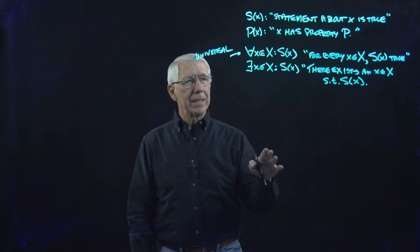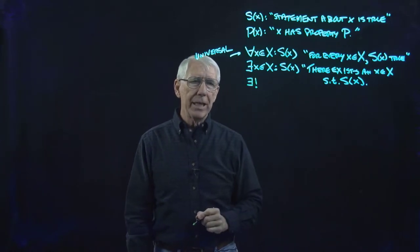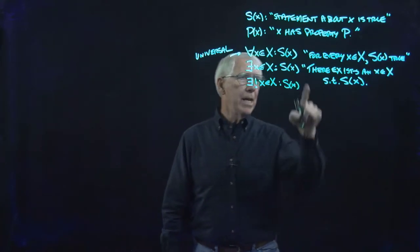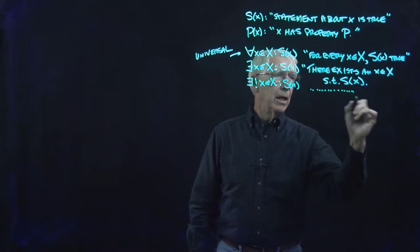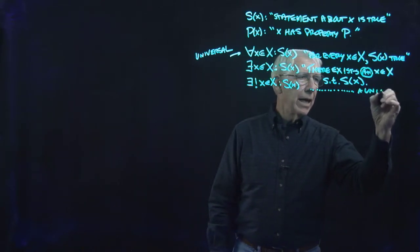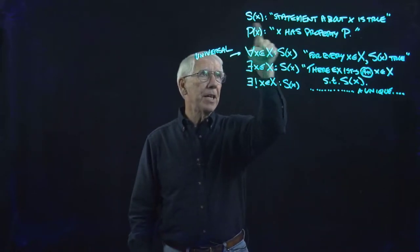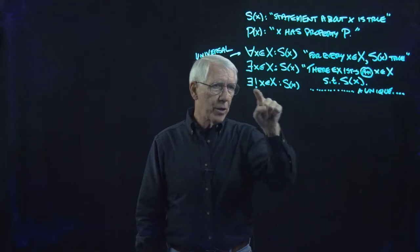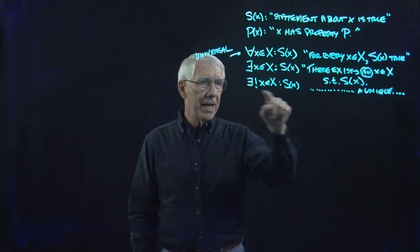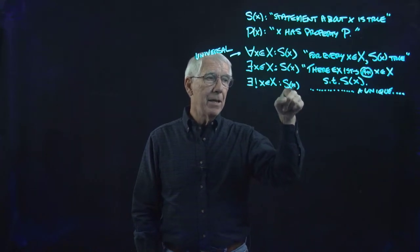There is a third — not really a new different quantifier, but slightly different. We write the backwards E with an exclamation point: there exists a unique X in capital X such that S(X). Notice that S(X) is a statement about X, but this whole existential statement is not a statement about X — it is a statement about capital X.